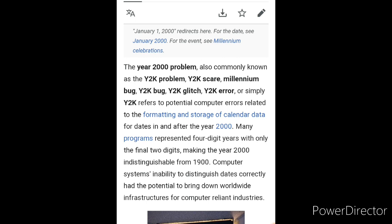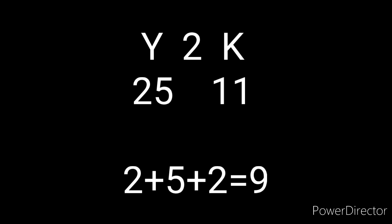The year of the dragon again on the Chinese calendar. So Y2K — the letter Y is the 25th letter in the alphabet, and the letter K is the 11th letter in the alphabet, so you have 25 and 11. Well, if you add 2 plus 5 plus the 2 — 25 and 2 — you get 9. And then if you leave the 11, you have 9-11.